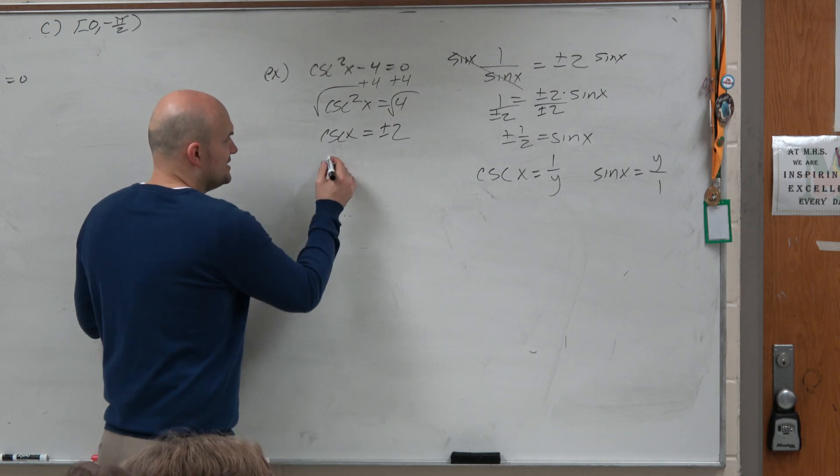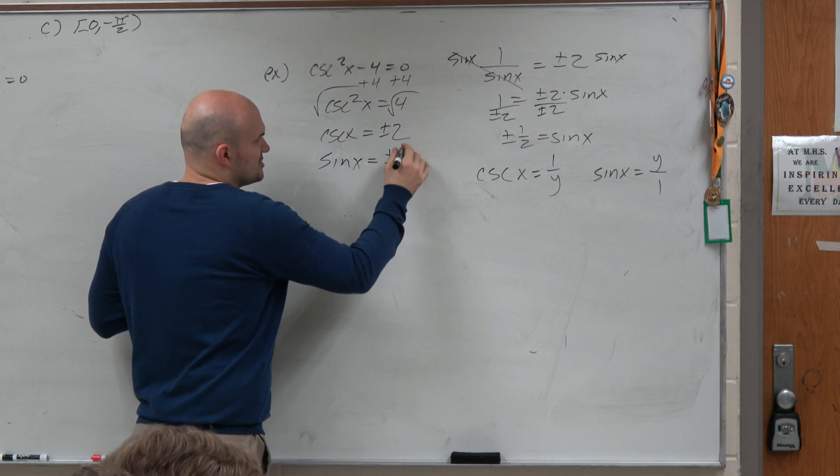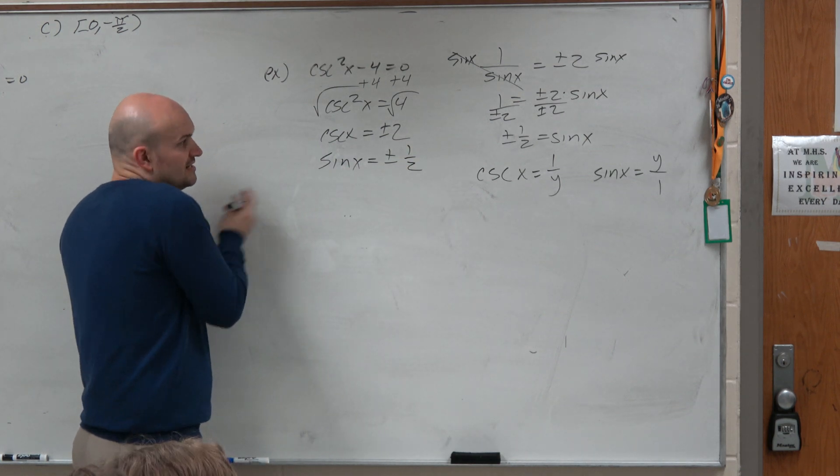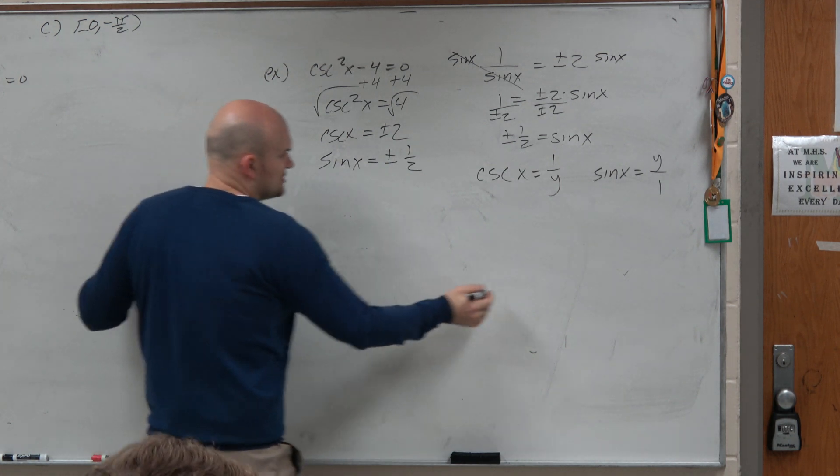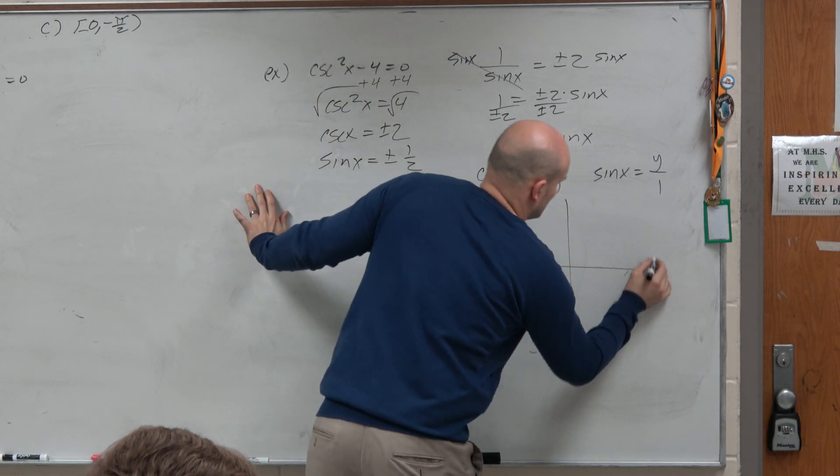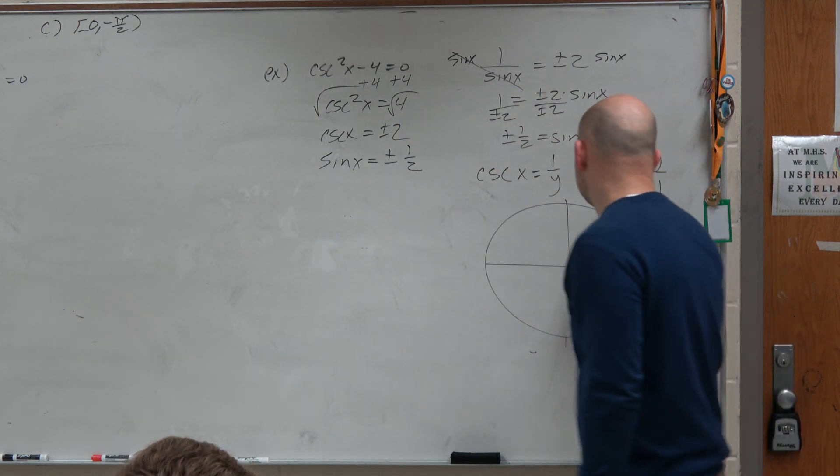So this, I know, is the same thing as plus or minus 1 half. Now I just got to figure out what are the angles then that make that true. So we go back to our unit circle. And I say sine of x is equal to 1 half. That is for, I know pi over 6 works,